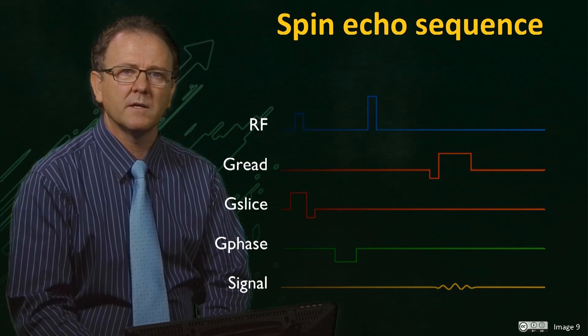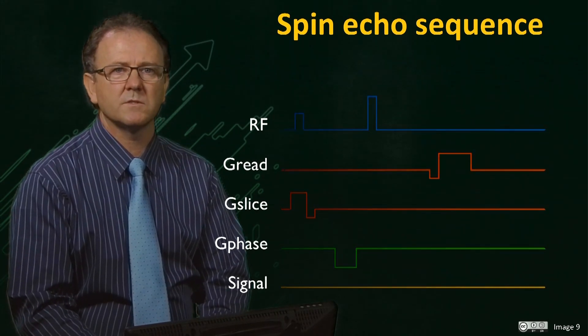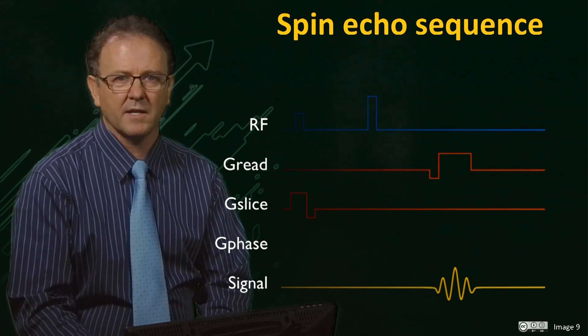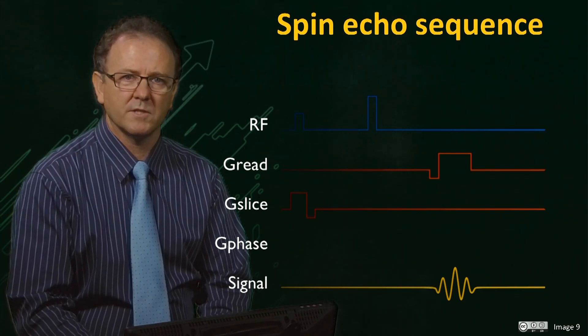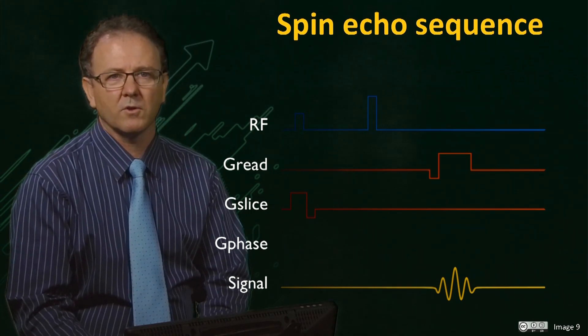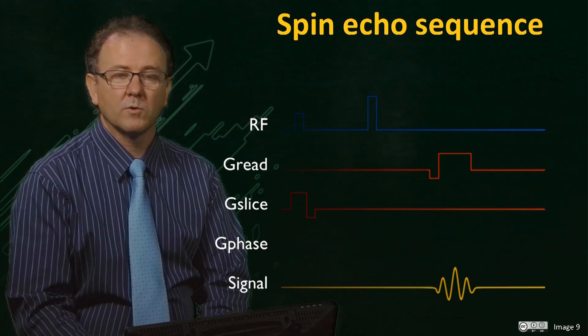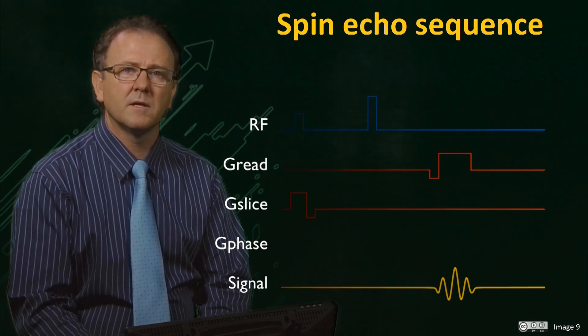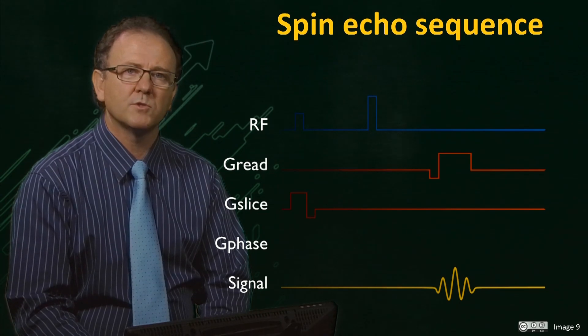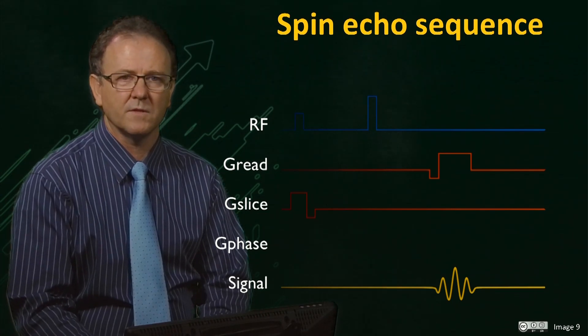In modern MRI, there are many variations of this sequence, which are designed to alter image contrast, enable faster scanning, or measure functional processes that occur in the body, such as blood flow, diffusion of water, or neurological activity. We will look at some of these in a later section, but the fundamental principles that we have discussed so far are common to all the MRI sequences that are used in the clinic.